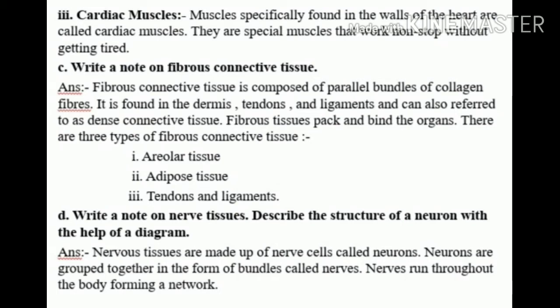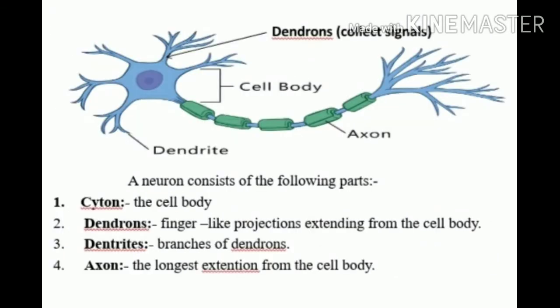Number 8d: Write a note on nerve tissues. Describe the structure of a neuron with the help of a diagram. Answer: Nervous tissues are made up of nerve cells called neurons. Neurons are grouped together in the form of bundles called nerves. Nerves run throughout the body forming a network. Now we'll draw the diagram and write in detail.